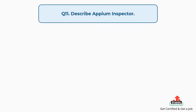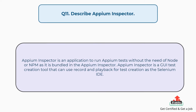Question number 11: Describe Appium Inspector. Appium Inspector is an application to run Appium tests without the need of Node or NPM, as it is bundled in the Appium Inspector. Appium Inspector is a GUI test creation tool that can use record and playback for test creation, similar to the Selenium IDE.